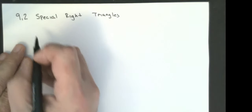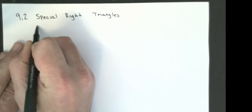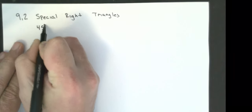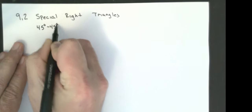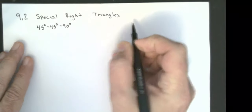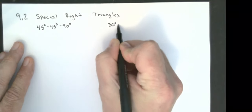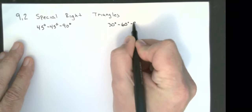The two triangles I consider special are 45-45-90 and 30-60-90.